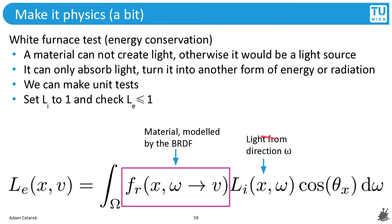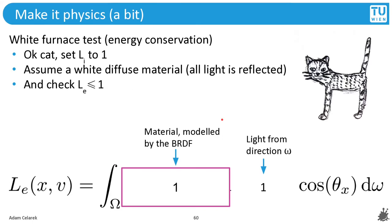We set this term, the amount of incoming light, to 1 and then check the outgoing term. It should be below 1. If it's greater than 1, we have an emitter and we don't want that. Okay cat, let's set this to 1. The incoming light is 1 everywhere. Let's further assume a white diffuse material, so all of the light is reflected. And now we want to check that this integral gives something smaller or equal than 1. We can guess that it will be 1 because we have a white material and white incoming light. So let's do it.